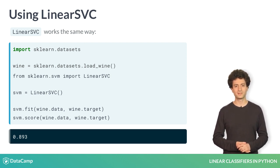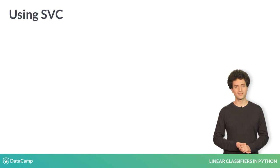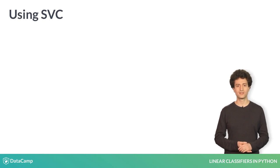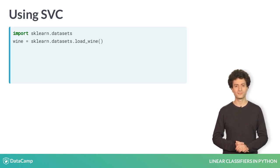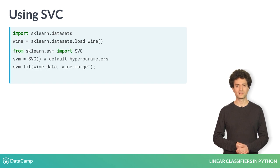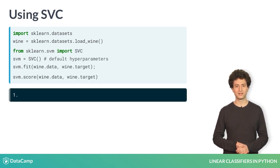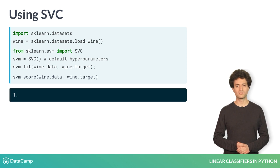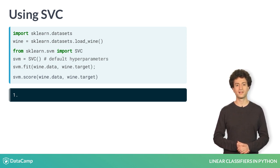We can repeat these steps again for the SVC class, which fits a non-linear SVM by default. As you can see, the classifier achieves 100% training accuracy. This could be the classifier overfitting, which is a risk we take when using more complex models like non-linear SVMs.